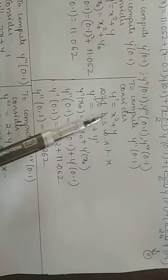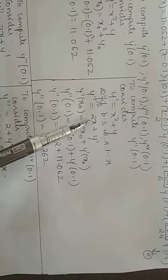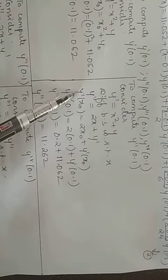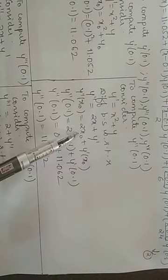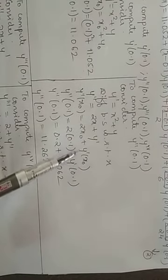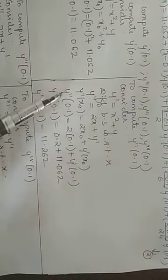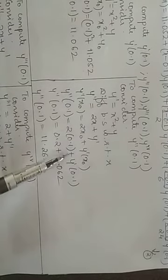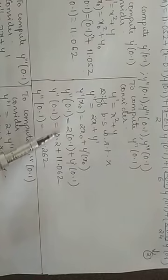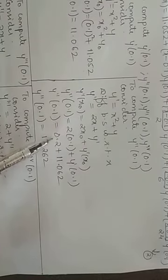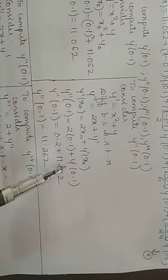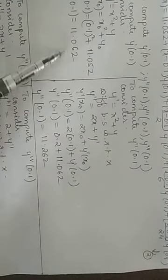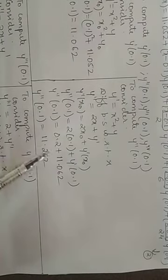Computing y''(0.1): from y'' = 2x + y', substitute x₀ = 0.1 and y'(0.1): y''(0.1) = 2(0.1) + y'(0.1) = 0.2 + 11.062 = 11.262.